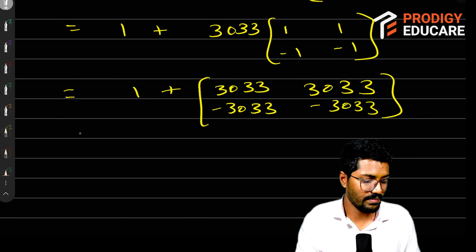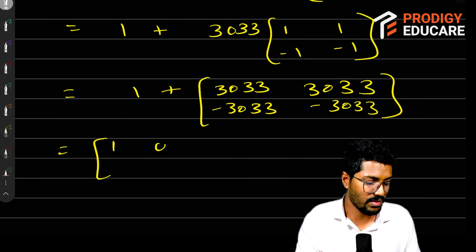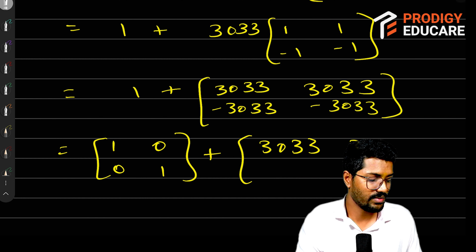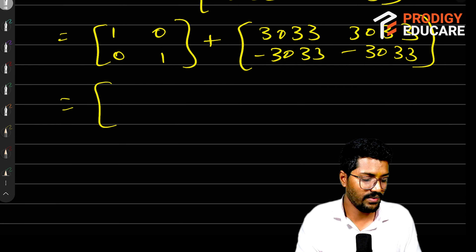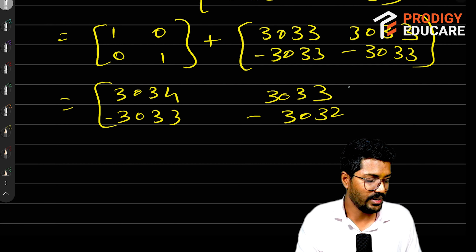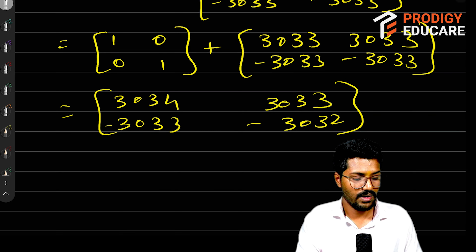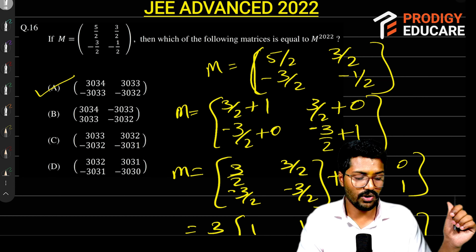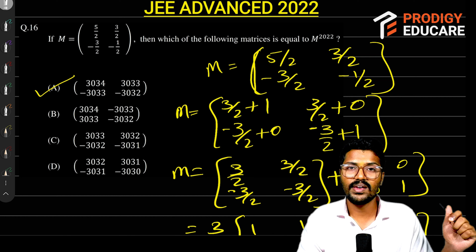Now converting the identity part: [[1, 0],[0, 1]] plus [[3033, 3033],[-3033, -3033]]. So finally we got the answer as [[3034, 3033],[-3033, -3032]]. Let's check the options — we got the correct option. This is the way to solve this type of question. Do subscribe to our channel.